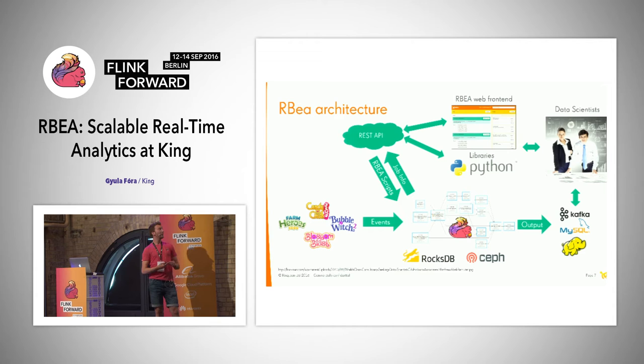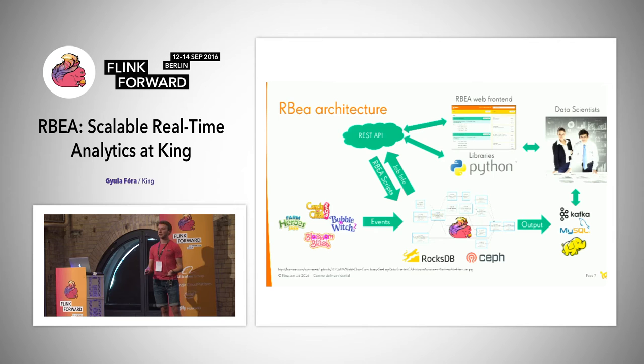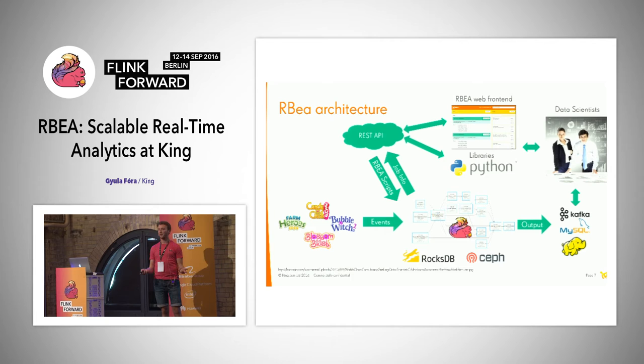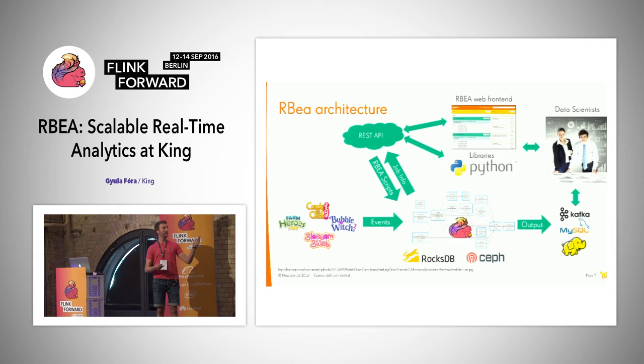Of course, this is a very heavy streaming job — it executes all the functionality that the framework provides, keeps state for each user using RocksDB, and for savepoints to recover jobs in case of failures we use a distributed file system called SAF, which you can think of as equivalent to HDFS. Of course, this Flink job writes output depending on the actual script — maybe data to Kafka, aggregates to MySQL, or files to Hadoop.